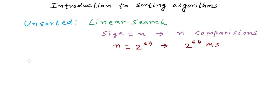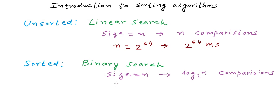If our list however is sorted, we can use something called binary search. And with binary search, if size of the list is equal to n, it will take only log of n to the base 2 comparisons to perform a search. So if n is equal to 2 to the power 64, we will take only 64 milliseconds.